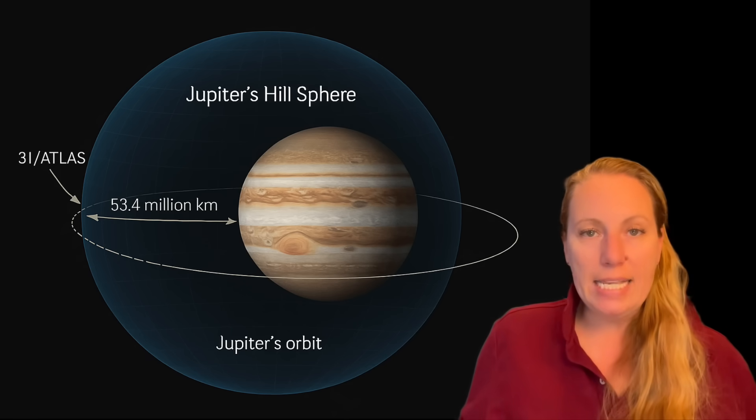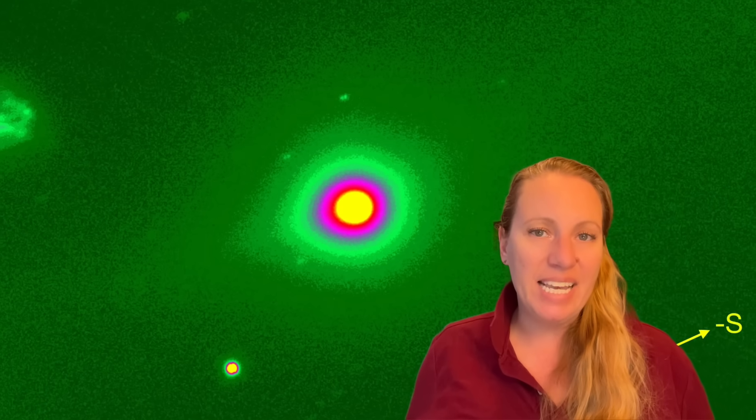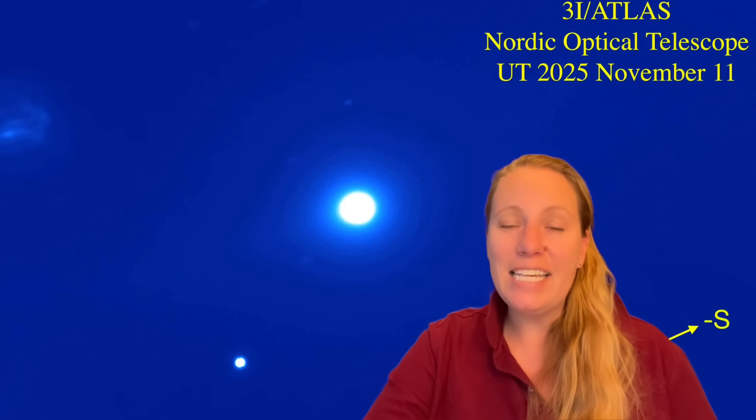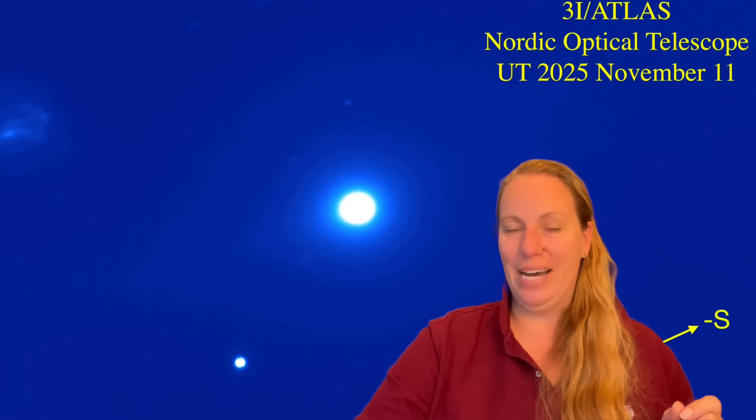Strange thing is, when Professor Avi Loeb reached out to NASA and told them about this mystery, or this new phenomenon, they didn't really give him an answer. They basically changed the numbers. And the new numbers projected 3i Atlas slightly outside the Hill radius. So they change it when someone asks about it. But there's a but.